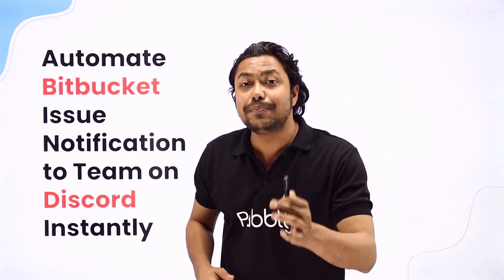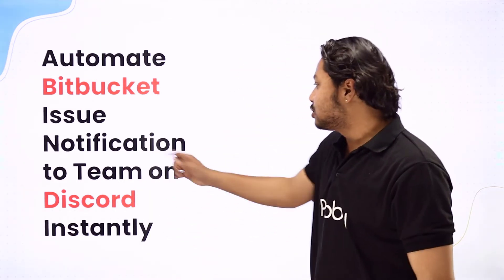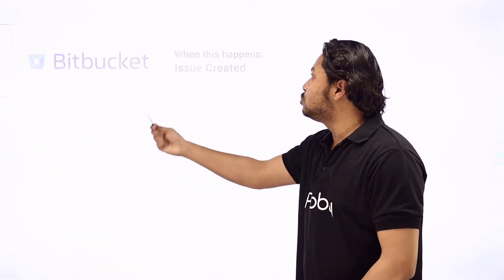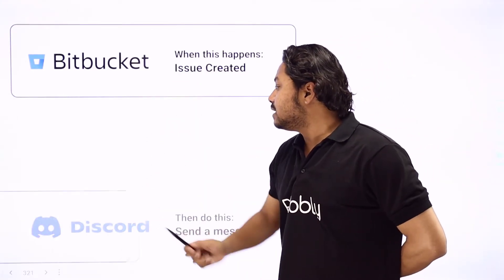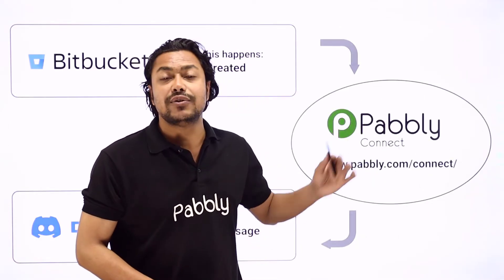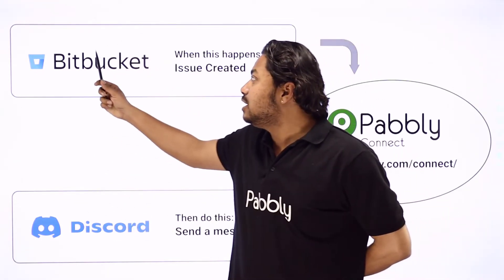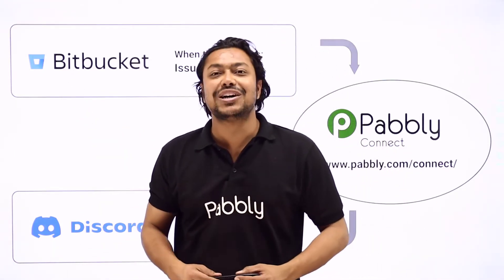Whenever a Bitbucket issue is created, it will automatically be sent to your team on your Discord channel. First, we are going to create an issue in Bitbucket. After that, that issue will be sent to our Discord channel as a message instantly and automatically. To do that, we are going to use an integration and automation service called Pabbly Connect. Pabbly Connect will help us connect Bitbucket with Discord so that any new issue created in Bitbucket will be sent to the Discord channel.